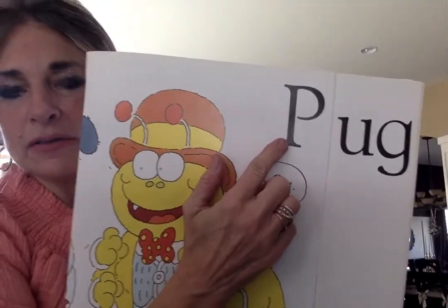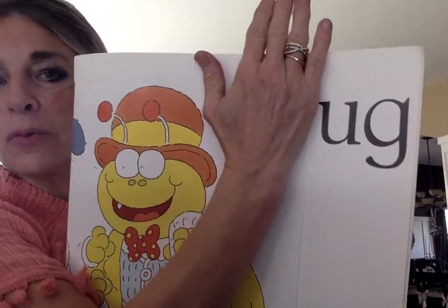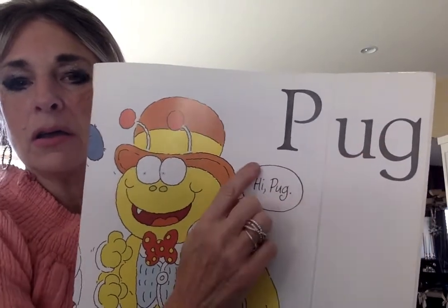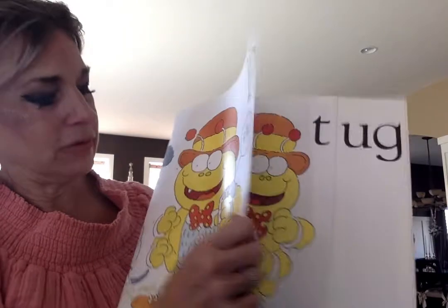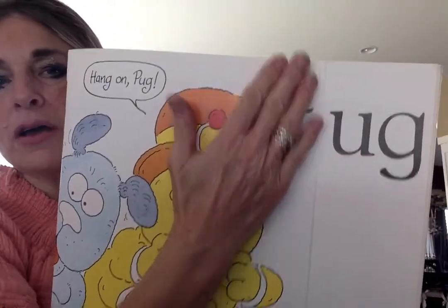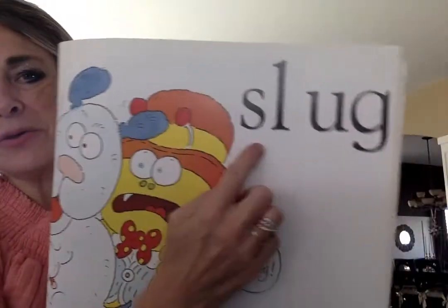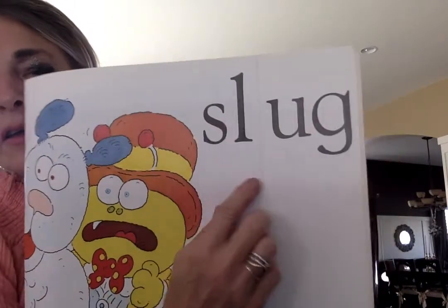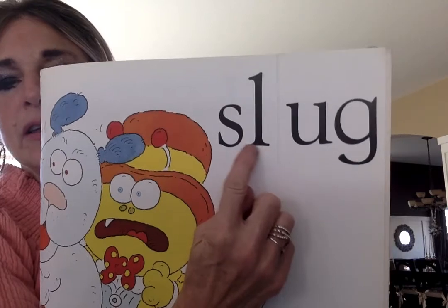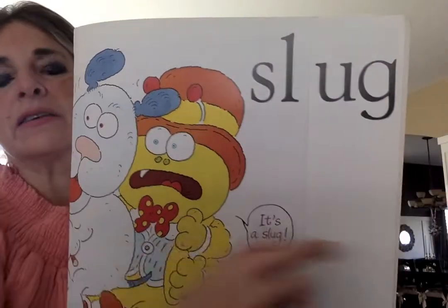Here's another UGG. If I know UGG, I know T-U-G. Tug. Another word family — it's a blend. UGG. I try S-L — S-L-U-G. Put it together, say it fast. Slug. There you go.